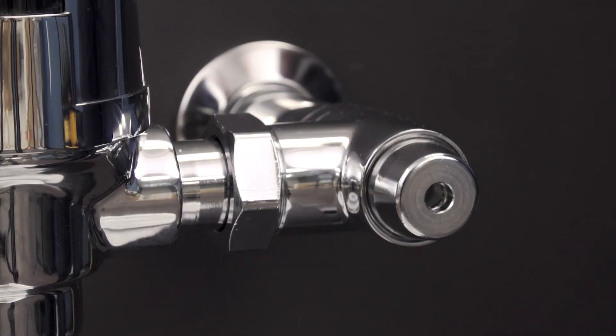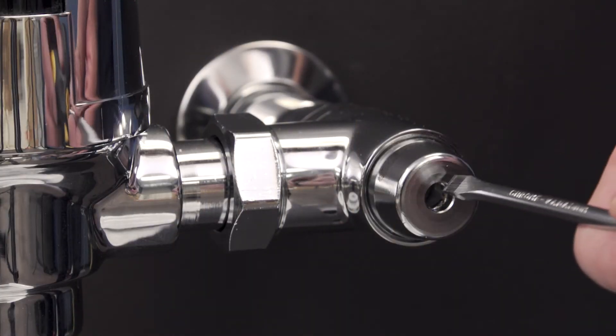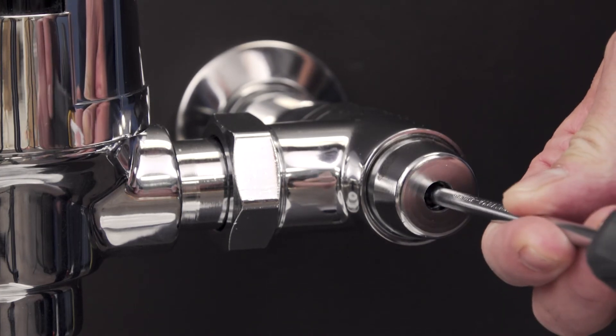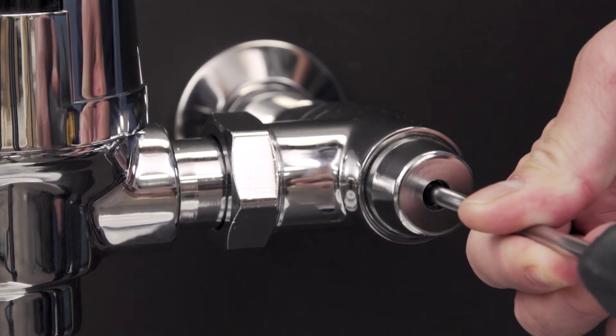If there is not enough water to properly flush the bowl, then first check the inlet stop. Open the inlet stop fully and check the operation. Check the pipes for any obstruction or corrosion.